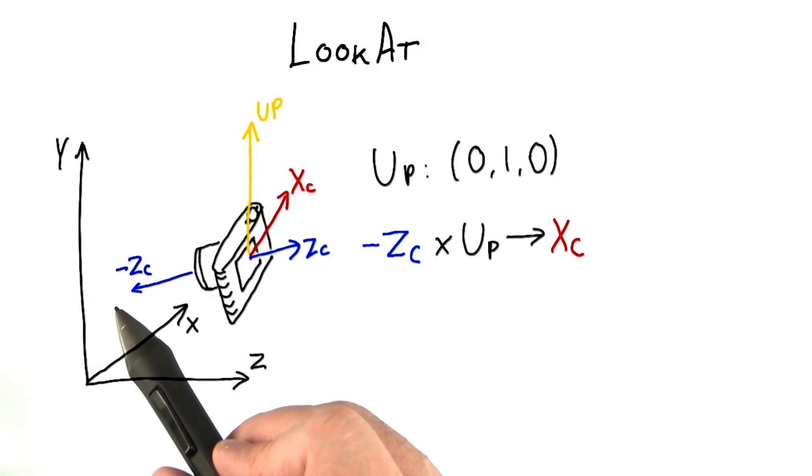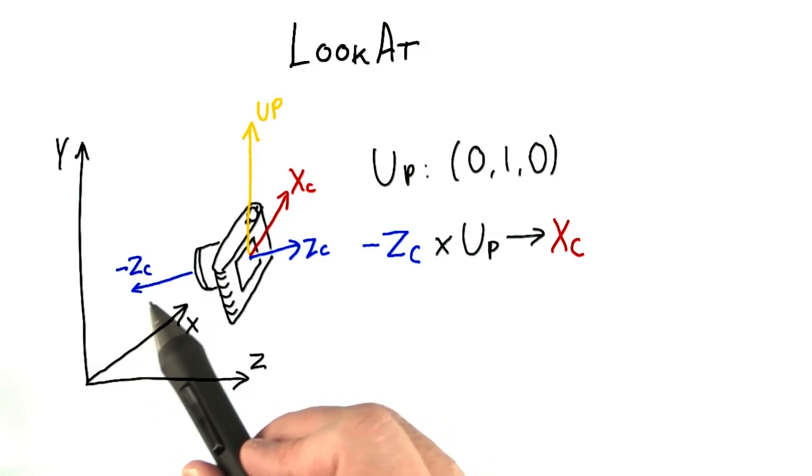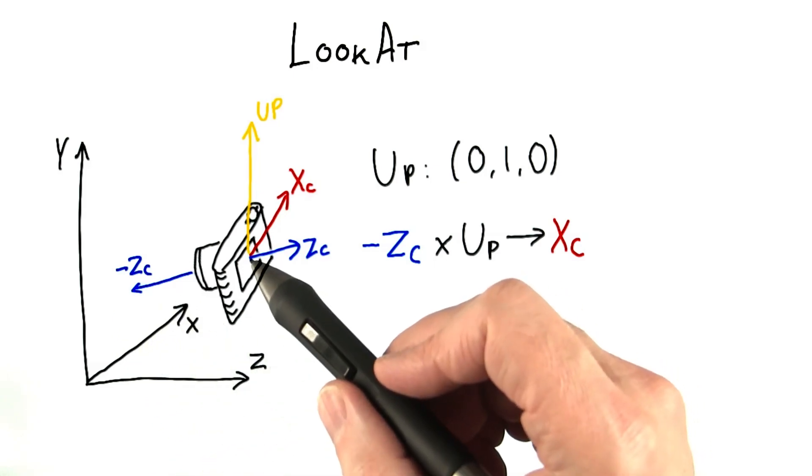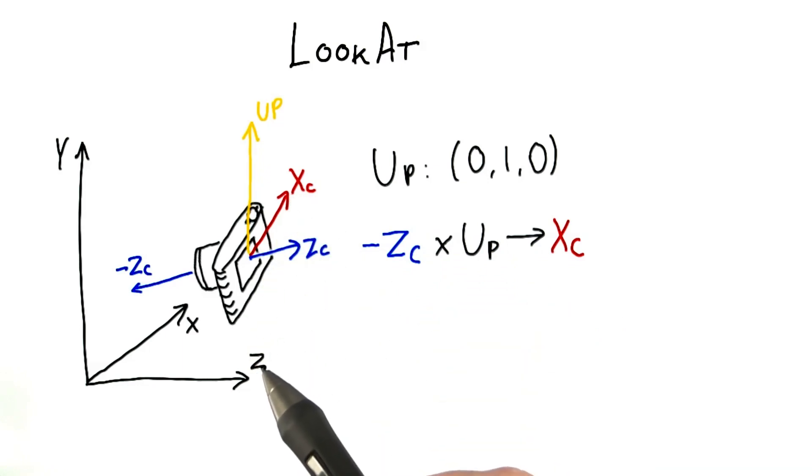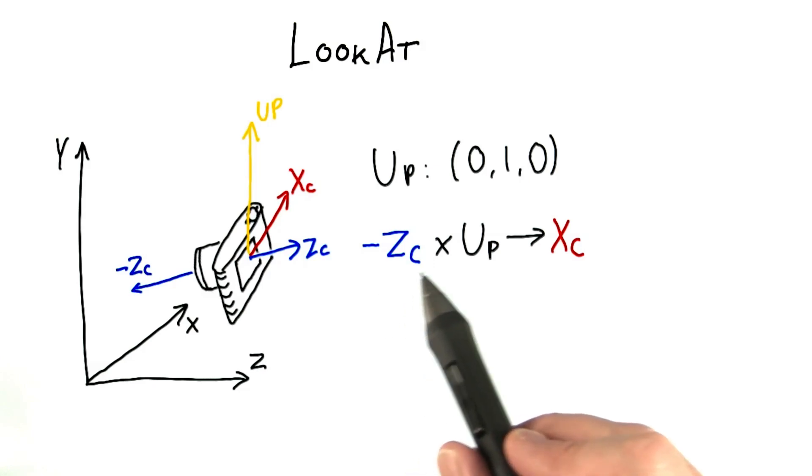For example, say we have a camera pointing in some direction, looking along its negative z axis. If we give an up direction, we can find the direction pointing to the right of the camera, which is the x axis, by taking the cross product of this z axis and our up vector.